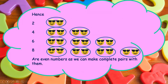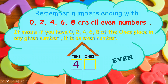Remember, 2, 4, 6 and 8 are even numbers as we can make complete pairs with them. Also remember, the numbers ending with 0, 2, 4, 6 and 8 are all even numbers. It means, if you have 0, 2, 4, 6 or 8 at the 1's place in any given number, it is an even number.